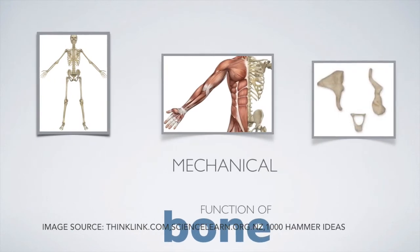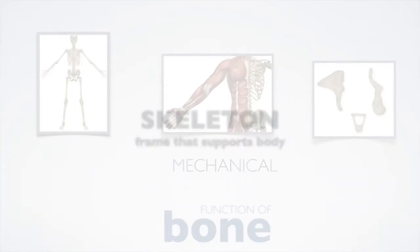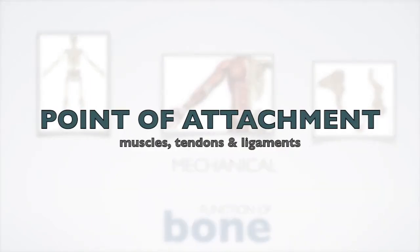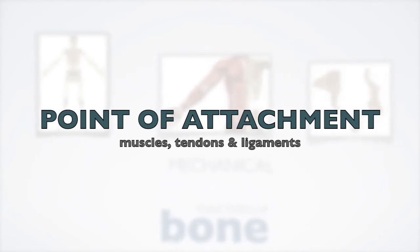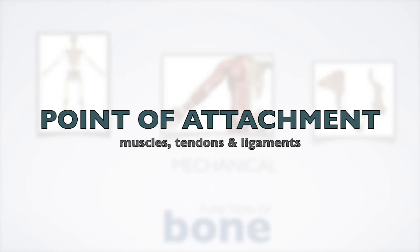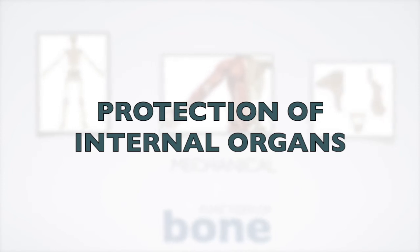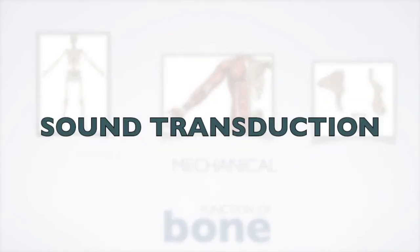Bones have a variety of functions. Mechanically, together the bones form the skeleton, providing a frame to keep the body supported and an attachment point for skeletal muscles, tendons, ligaments, and joints, working together to generate and transform forces. Bones also protect internal organs — the skull protects the brain and the ribs protect the heart and lungs. Bones also have a special role in hearing; the ossicles are three small bones in the middle ear involved in sound transduction.